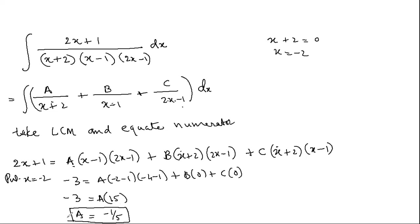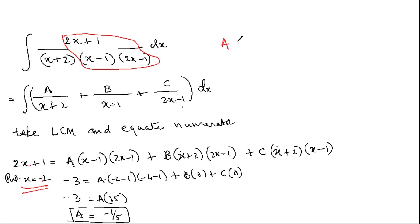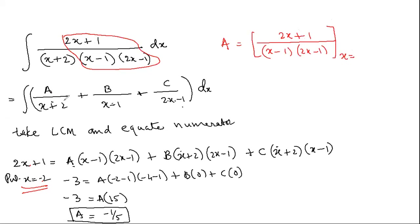Shortcut method: A's denominator is (x + 2). Delete (x + 2) from the original expression. What remains is (2x + 1) divided by (x − 1)(2x − 1). Replace x by −2 everywhere: numerator = −4 + 1 = −3; denominator = (−2 − 1)(−4 − 1) = (−3)(−5) = 15. So A = −3/15 = −1/5. The (x + 2) factor is deleted and x is replaced by −2 in what remains.